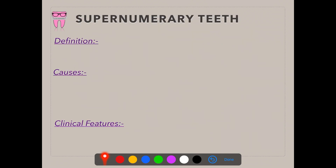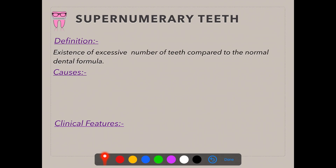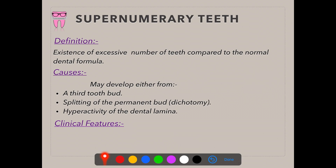Now coming to supernumerary teeth — super means increased and numerary means number, so supernumerary means an increased number of teeth. It is the existence of an excessive number of teeth compared to the normal dental formula. The causes include a third or accessory tooth bud arising from the same dental lamina, splitting of the permanent tooth bud (dichotomy), or hyperactivity of the dental lamina, extending to give rise to an excessive number of teeth.